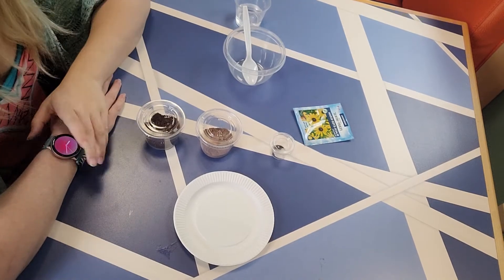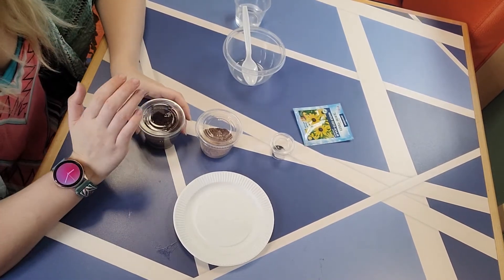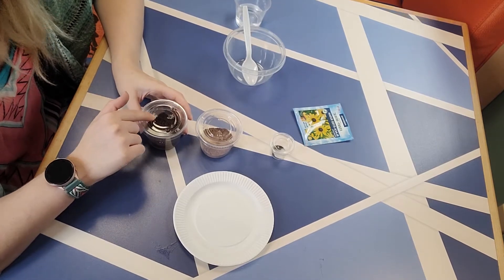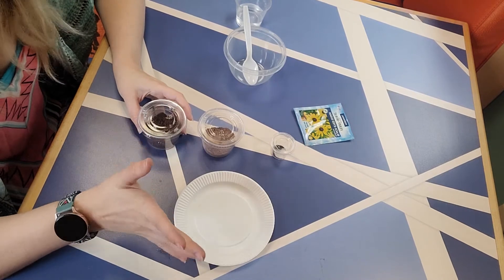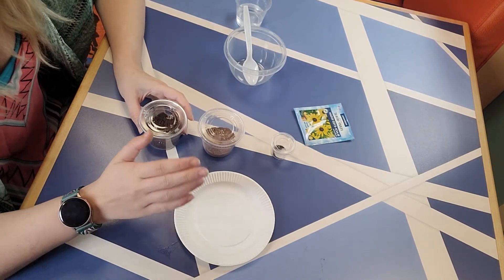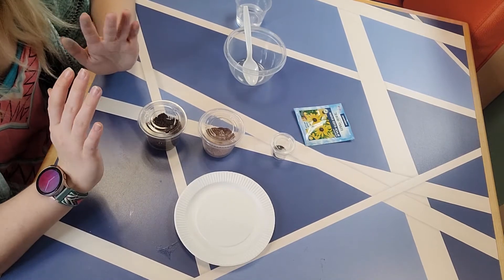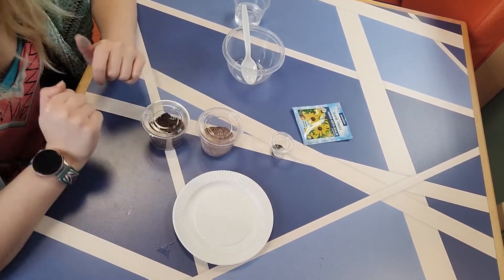One last thing before we get started. You don't have to be exactly precise with this. The recipe that I'm following suggests that you do five handfuls of soil, five handfuls of clay, and a handful of seeds, which is not an exact measurement by any means. So really don't worry about getting this exactly right or exactly perfect. As long as your ratios are close, you should be fine.